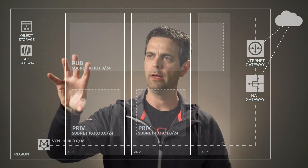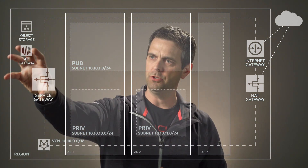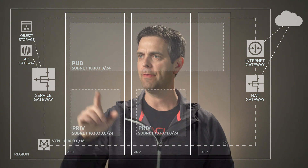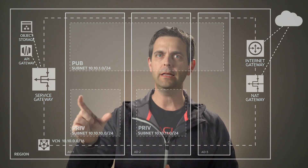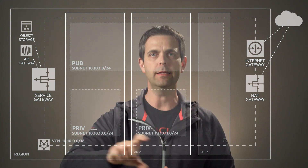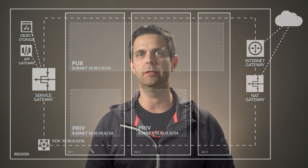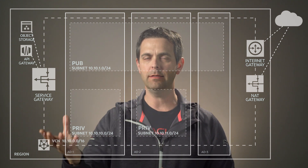That's where the service gateway comes into play here. The service gateway allows us to directly route traffic from any subnet inside of our VCN out to these public cloud services in the same region. And it does this in a secure, controlled fashion without having to access or reach out to the public internet to communicate with these services.